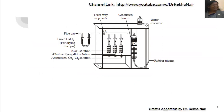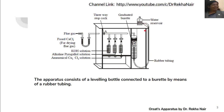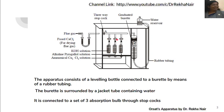This is the equipment — this is the Orsat apparatus. In this Orsat apparatus, it consists of a leveling bottle connected to a burette by means of rubber tubing. By changing the position of the water reservoir, we can change the level of water present in the burette. This burette is surrounded by a water jacket tube containing water. It is connected to a set of three absorption bulbs, and all three bulbs have different stopcocks.